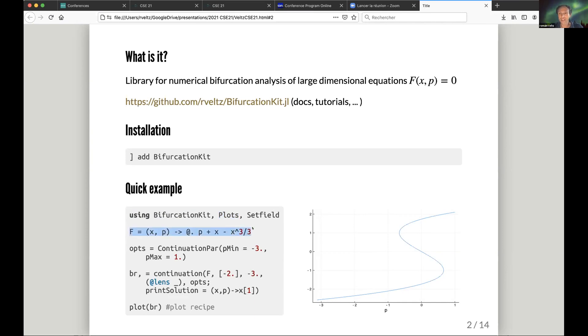Let's say you want to compute the zeros of this cubic. We define the function, we're going to compute it for parameters b and one. Then we pass the vector field f, a rough initial guess of minus two for parameter minus three, and we want to print the solution. We pass this function, compute the branch br, and plot it with a plot recipe.